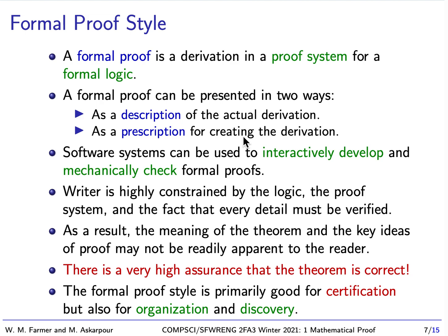In a formal proof system, there are carefully prescribed rules for how you build a derivation, and the formal proof can be presented by describing the actual derivation or prescribing how to create it. Because formal proofs work in a formal language, we can write software to help develop or mechanically check them — something very different from traditional proofs, which are written in natural language and are not easy to verify by software. In a formal proof, the writer is constrained by the logic and proof system, and every detail must be verified, so the key ideas may be buried in the formal derivation. But formal proofs allow mechanical correctness checking, giving high assurance that the theorem is correct. The formal proof style is primarily good for certification, and also for organization and discovery.